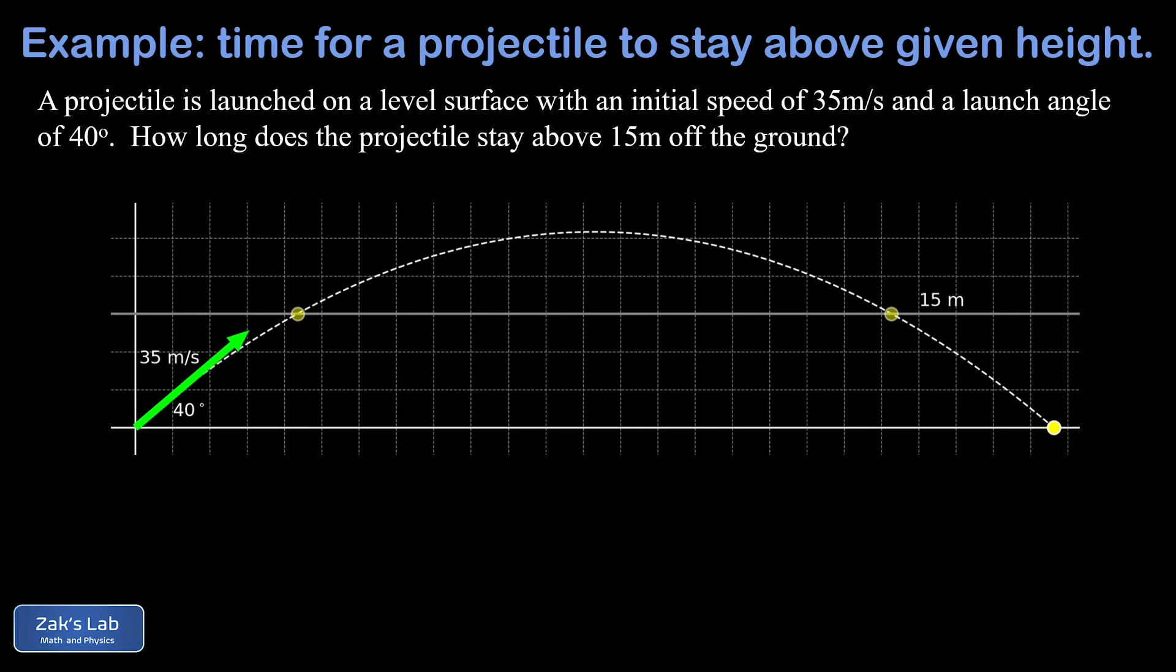So we'll start setting ourselves up for a vertical analysis by finding the initial y component of velocity. So there's our y component of velocity, we normally call that v naught y. And this is given by 35 times the sine of 40 degrees. And when I run the numbers on this to three significant digits, it comes out to 22.5 meters per second.